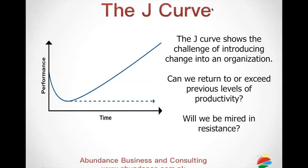But if they do three things — one, they own that change; two, they keep on communicating to all the people in the organization; and three, they become a role model of change — then performance will automatically go up with time, signifying the J-curve that happens in our lives also. It is basically the idea of how change should be taken care of in the organization. Thank you very much and take care.